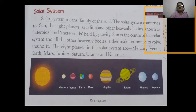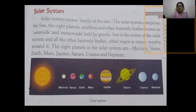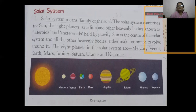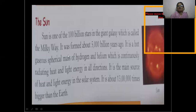The eight planets in the solar system are Mercury, Venus, Earth, Mars, Jupiter, Saturn, Uranus, and Neptune. Students, till 2006 there were nine planets — Pluto was also included in this solar family. But after 2006, Pluto is no longer in the solar family. It is a dwarf planet — a very tiny planet. Now we will study about each one of these in detail.